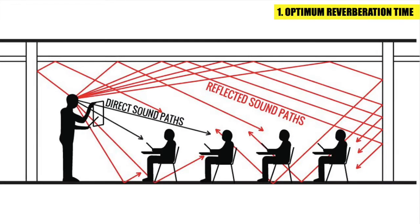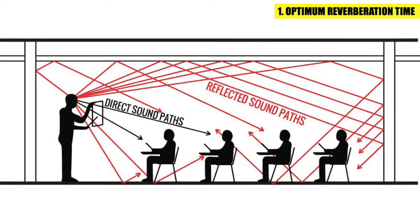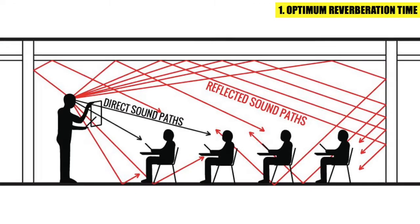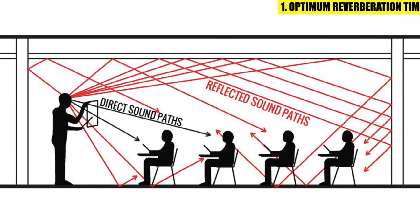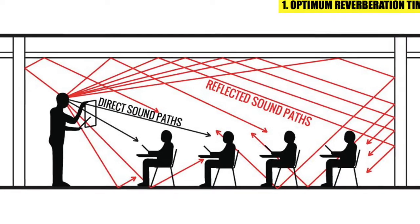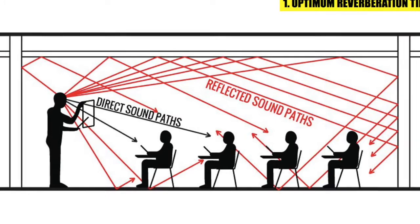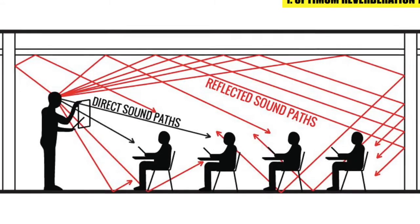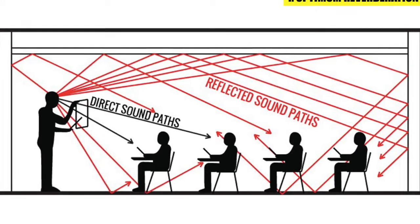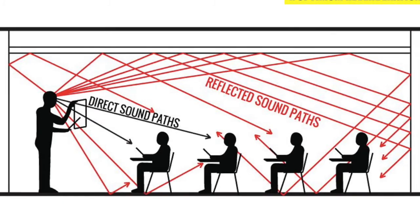The first one is optimum reverberation time. If reverberation time in a hall is too large, there is an overlapping of successive sound which results in loss of clarity and echo. On the other hand, if reverberation time is very small, loudness is not sufficient. Thus it is very important that reverberation time in a hall should not be too long or too short.